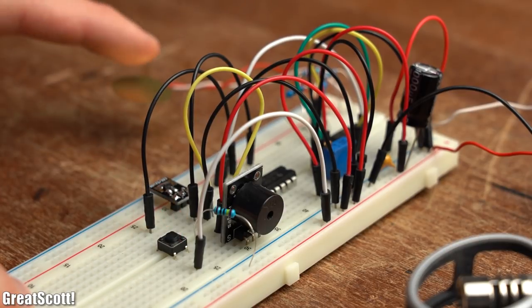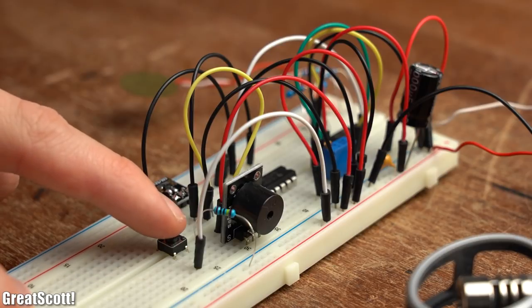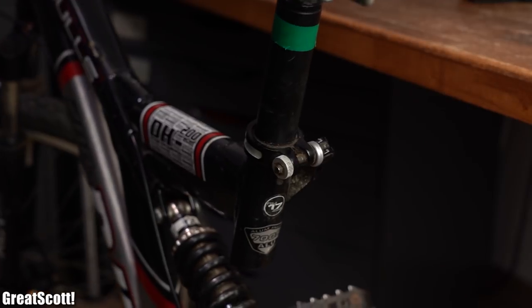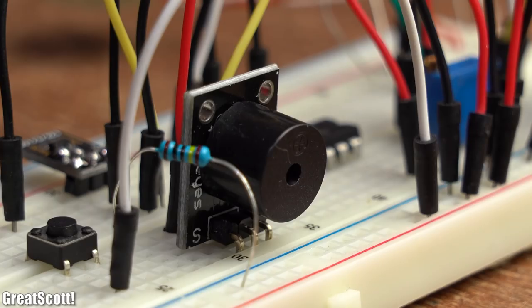At this point we could call it a day and use the circuit like this. But let's imagine your bike gets hit by wind or something similar, and the circuit will just keep buzzing until the battery is empty.